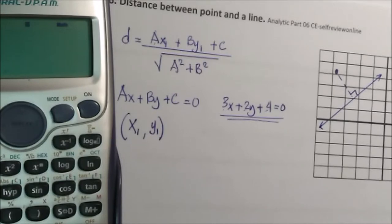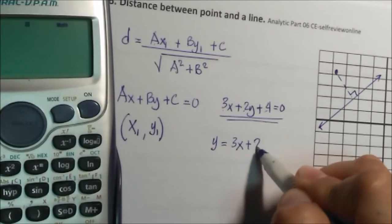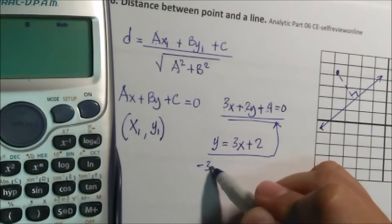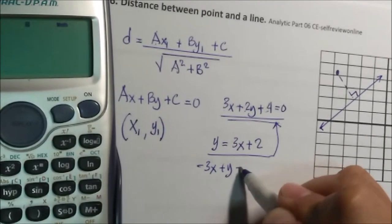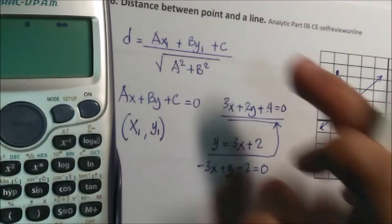If your equation is, for example, y equals 3x plus 2, you need to convert this one to this form. So this will be negative 3x plus y minus 2 equals zero for you to use this equation.